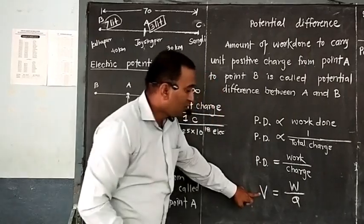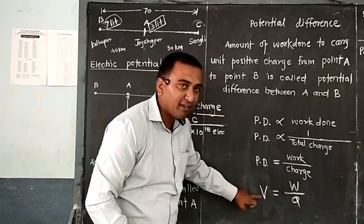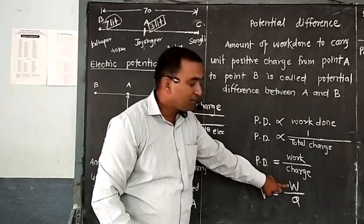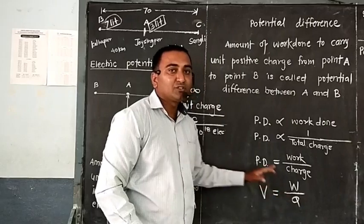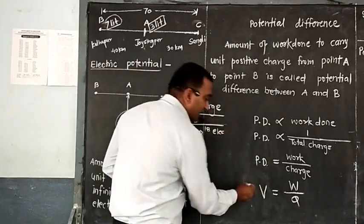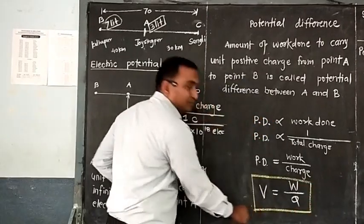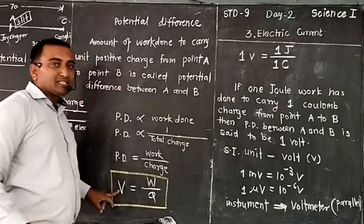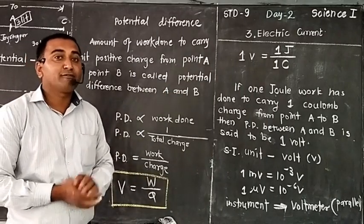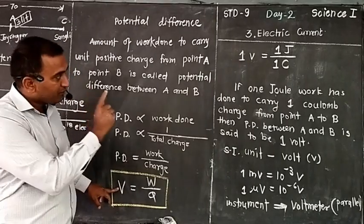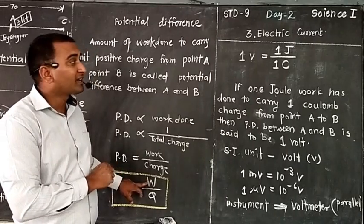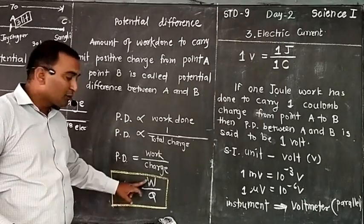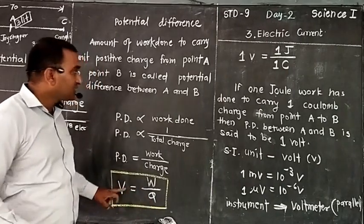By combining both equations, we get: potential difference is equal to work done divided by charge. Because the amount of work done to carry charge is called potential difference. Finally, the formula is: potential difference V is equal to W divided by Q. Potential difference is measured in volts. The SI unit of work is joule, and the SI unit of charge is coulomb. So, V equals J divided by C — volt is equal to joule divided by coulomb.